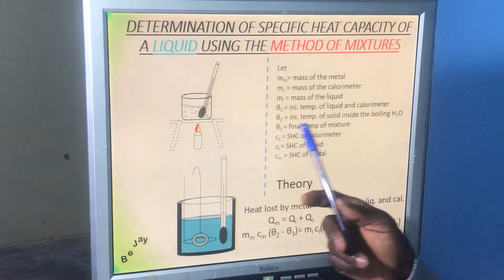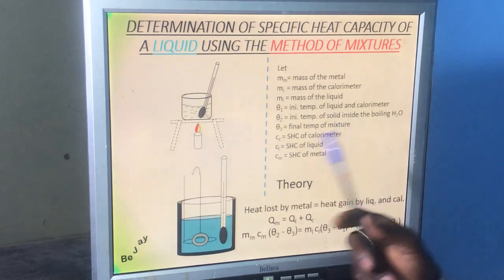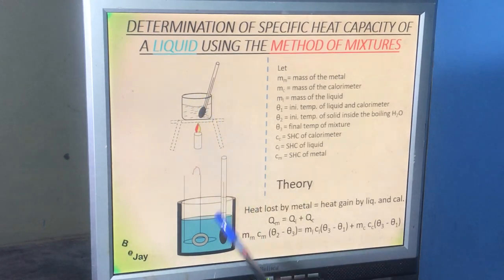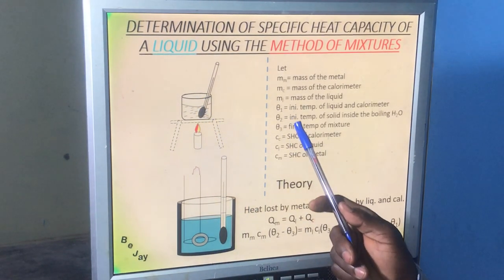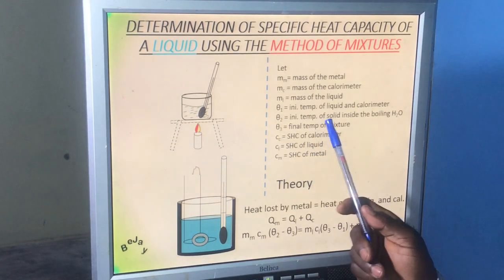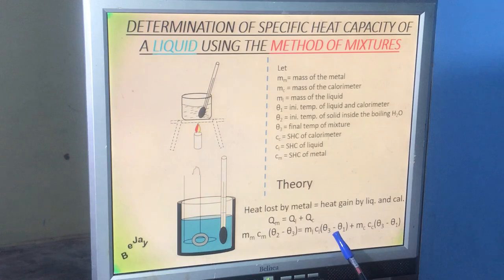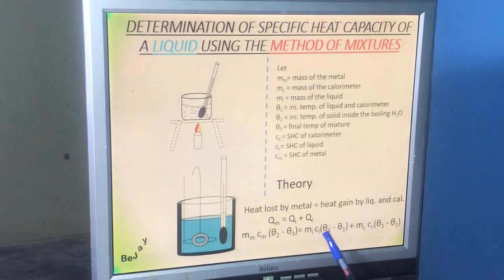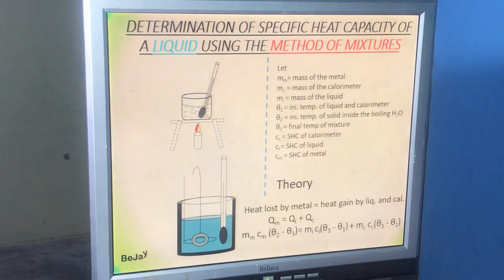Theta 3 is the final temperature of the mixture, and theta 2 is the initial temperature of the solid. The solid was hot, so theta 2 is bigger than theta 3, meaning we subtract theta 3 from theta 2 for the metal. For the liquid and calorimeter, theta 3 is bigger than theta 1, so we subtract theta 1 from theta 3. We are looking for the specific heat capacity of the liquid, Cl, so we make Cl the subject of the formula to find it.